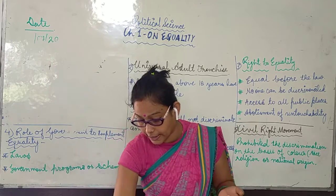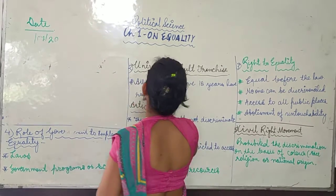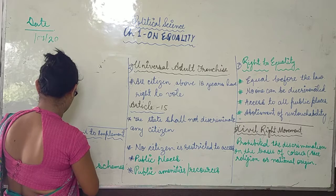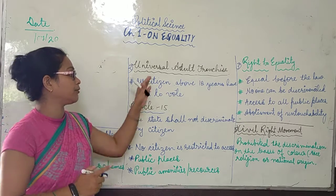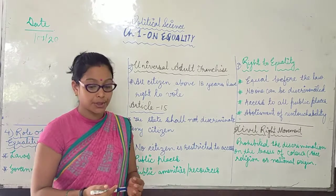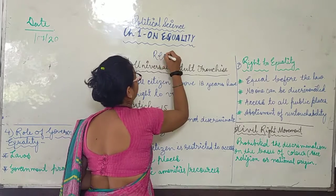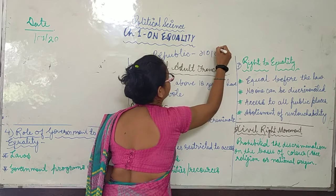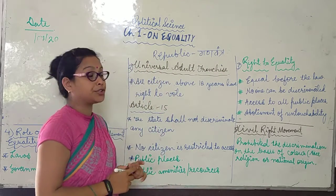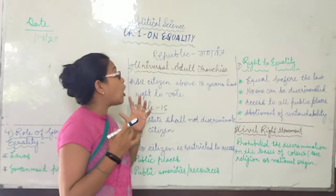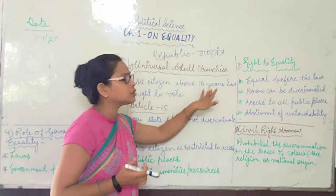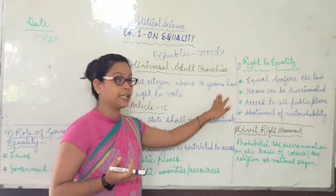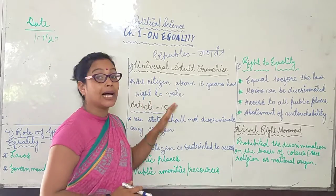Now let's discuss the second topic: universal adult franchising. A country which is a republic or democratic country allows all citizens above a certain age to vote. In India, that age is 18 years. All citizens above 18 years have the right to cast their vote and by casting their vote they can elect the head of the state.